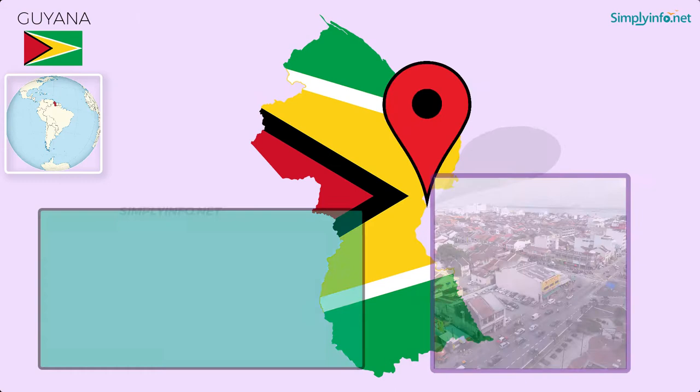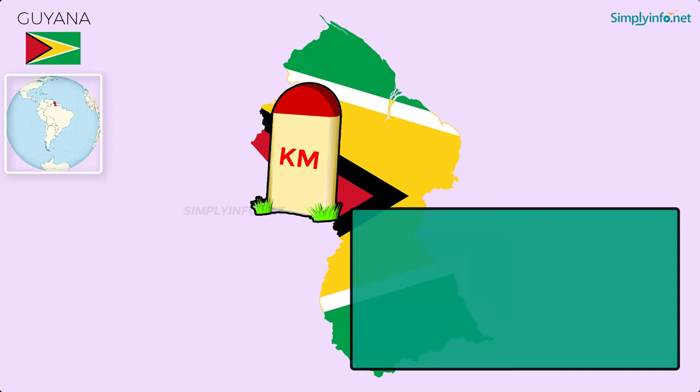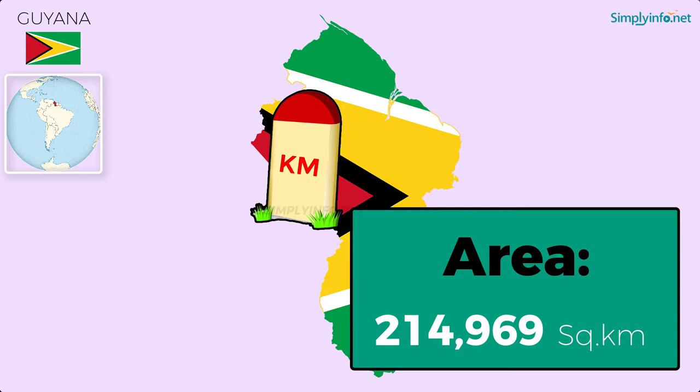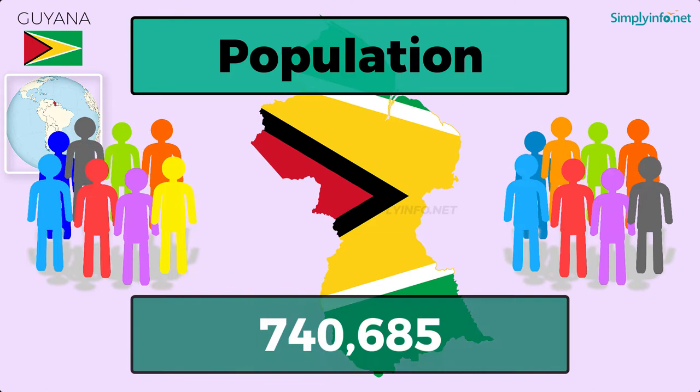Area: 214,969 square kilometers. Population as of 2018: 740,685. Language: English.